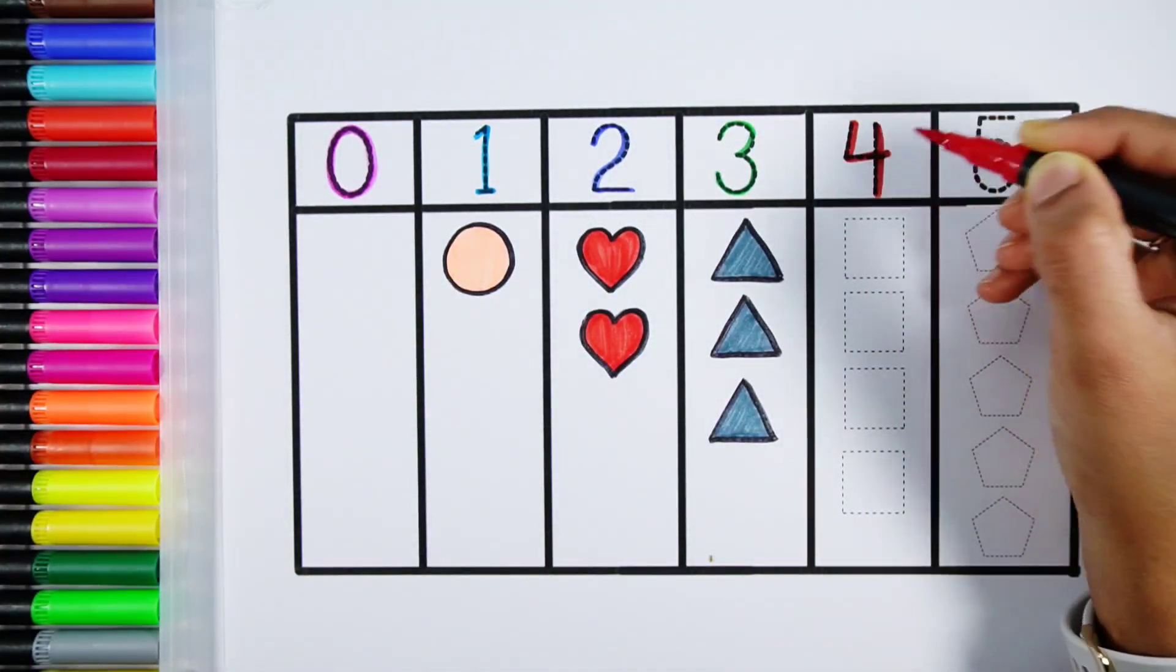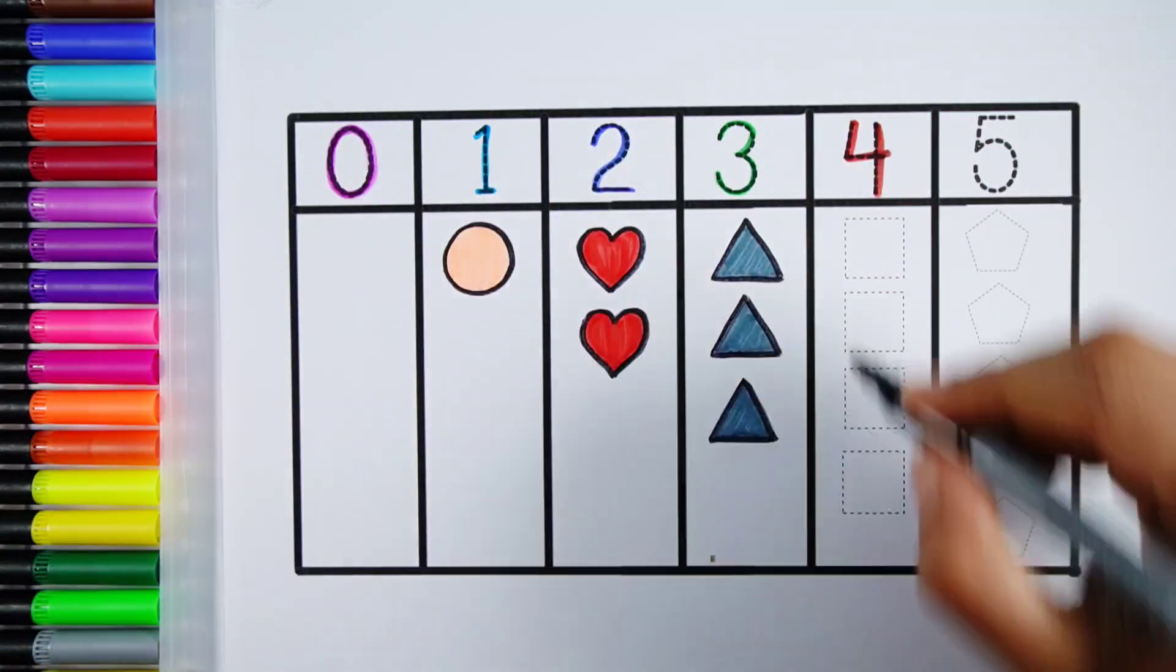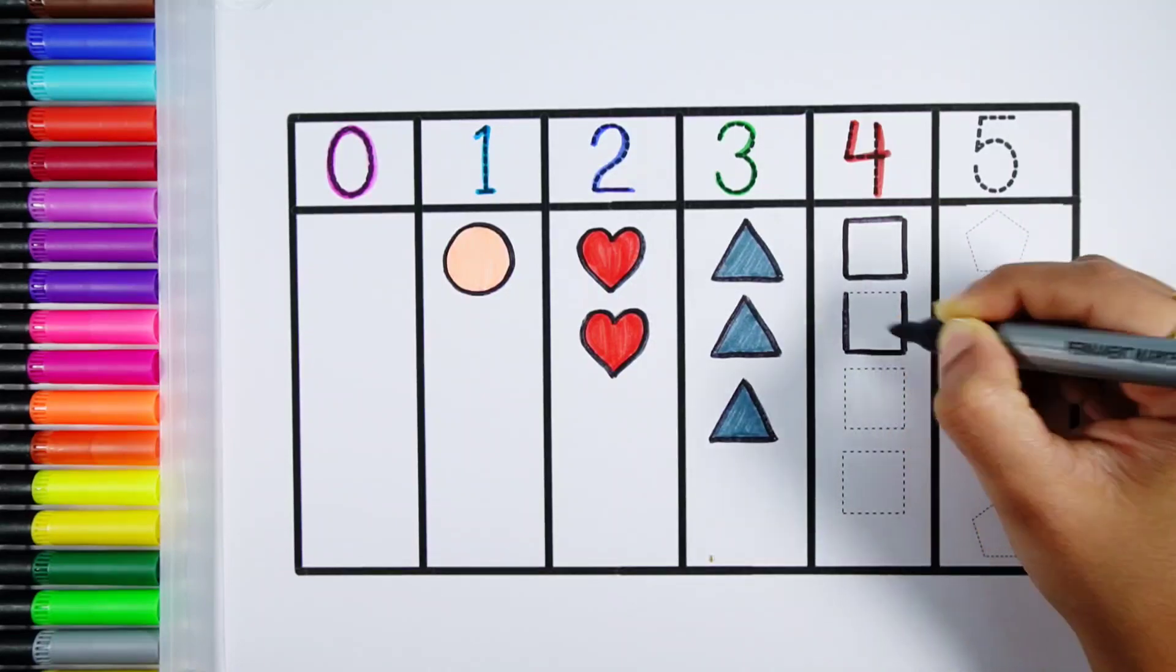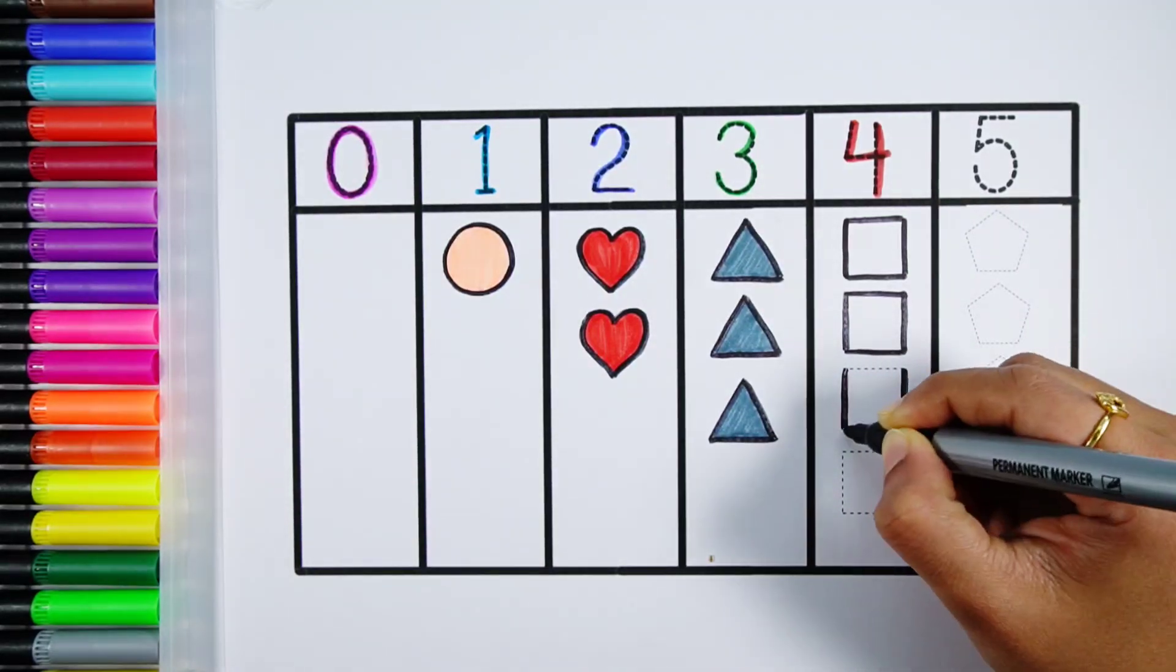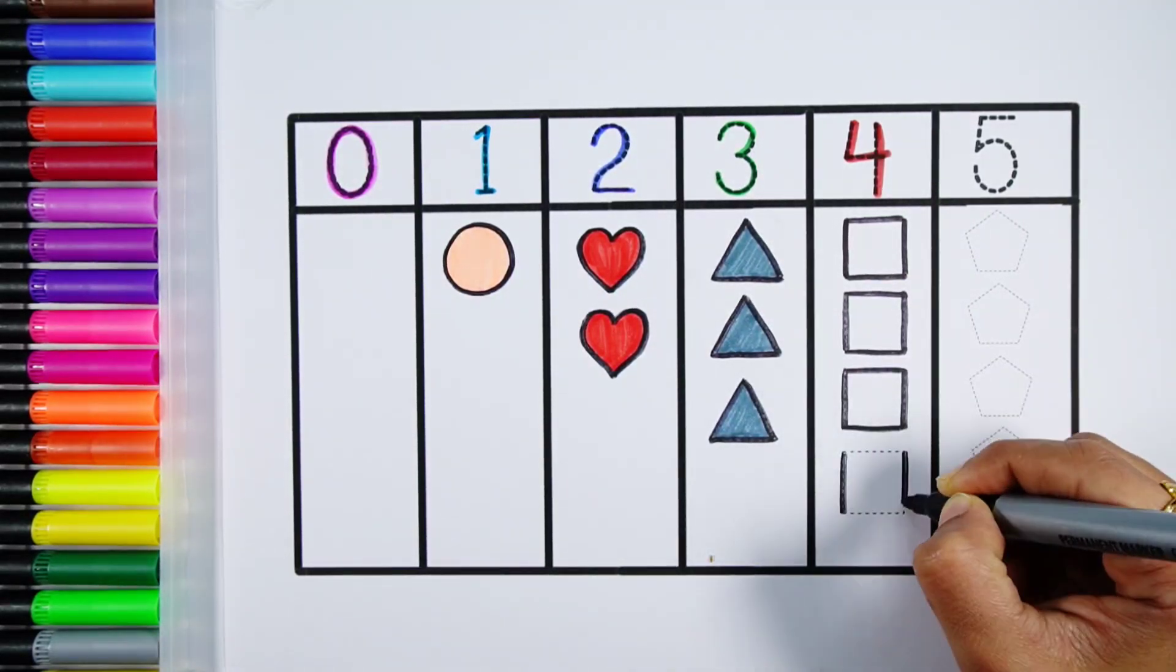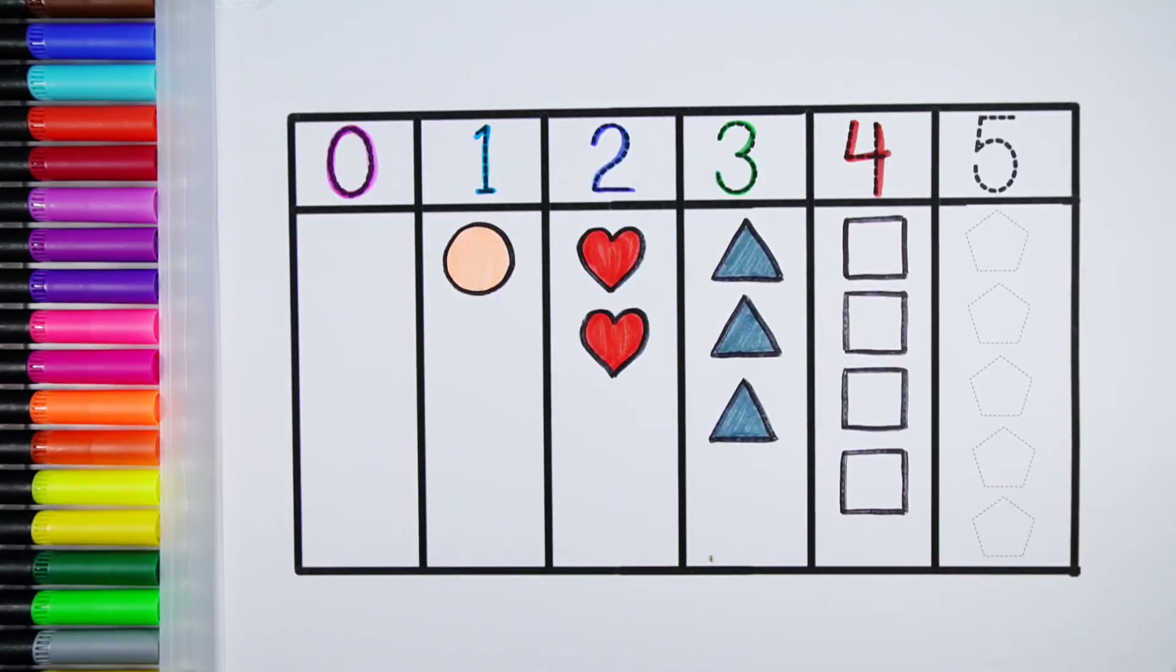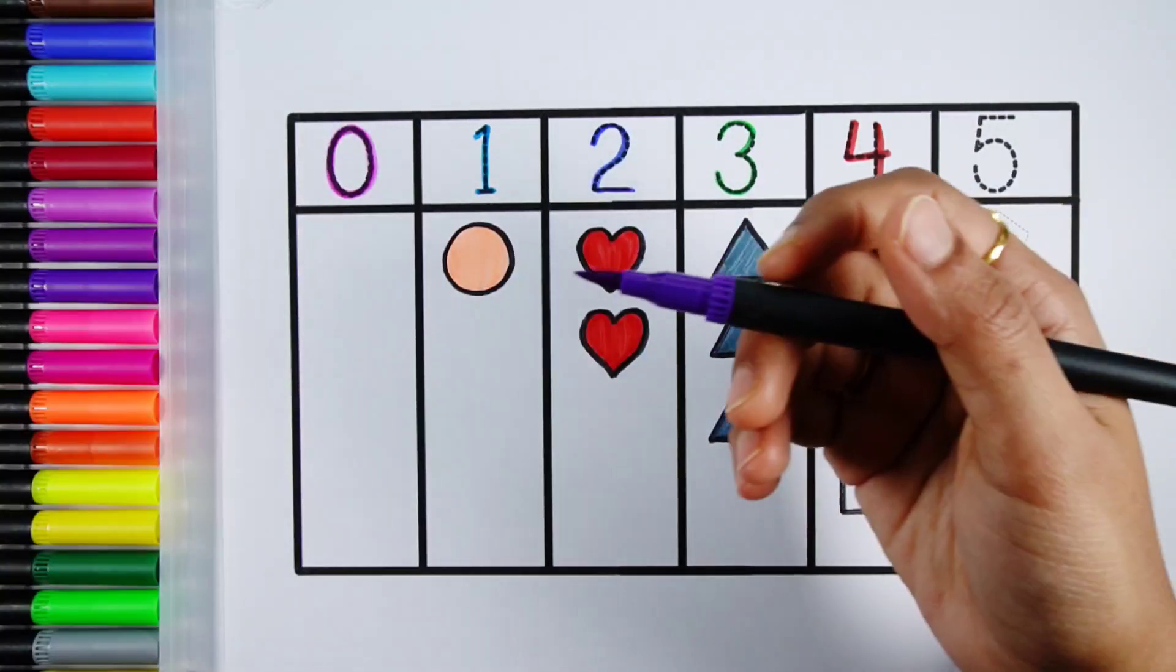Number four. One, two, three, four. Four squares, violet color.